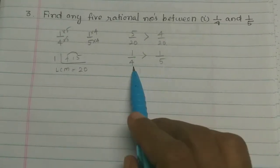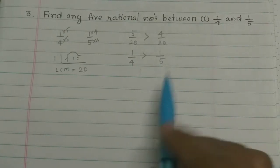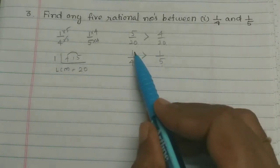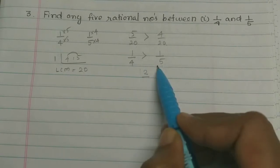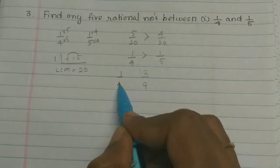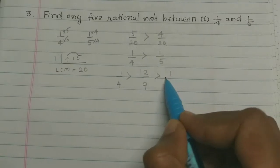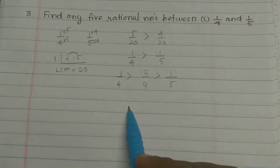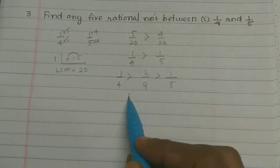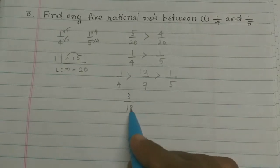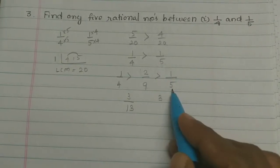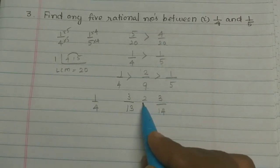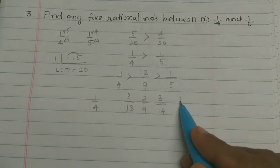So 1 by 4 is greater than 1 by 5. Using the mediant method: 1 plus 1 is equal to 2, and 4 plus 5 is equal to 9. So 1 by 4 is greater than 2 by 9, and 2 by 9 is greater than 1 by 5. For 5 numbers, we continue: 1 plus 2 equals 3, then 9 plus 4 equals 13, and 2 plus 1 equals 3, and 9 plus 5 equals 14. So between 1 by 4 and 1 by 5, we have 3 by 13, then 2 by 9, then 3 by 14.